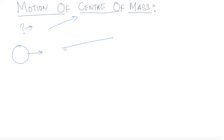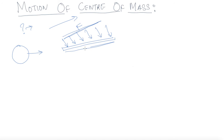Suppose this is a rod and a uniform force F is applied to all of its particles. Because of the application of force F, this object will move in this particular direction. It gets a displacement of X — X may have some positive quantity or it may be zero.